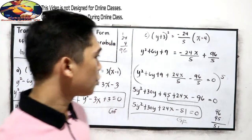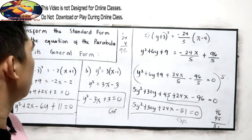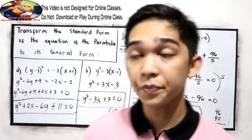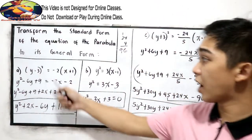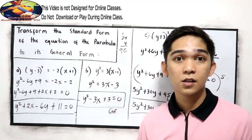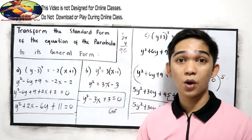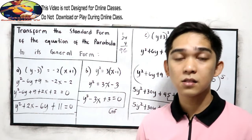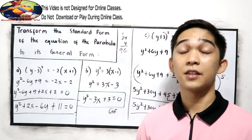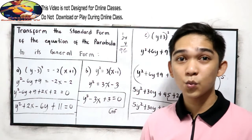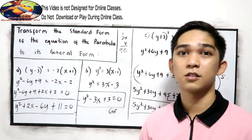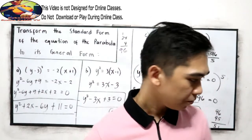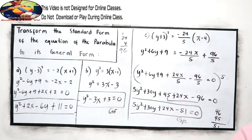In order for you to master transforming standard form to general form, notice that we use the square of a binomial. You can go to our Grade 8 playlist and watch Lesson 1 on special products. For your assignment, you can answer the following problems.